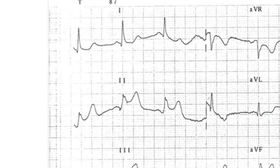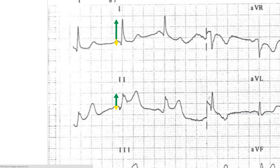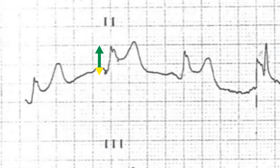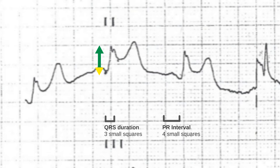The axis is normal with an upright complex in lead 1 and lead 2. The PR interval is normal measuring 4 small squares and the QRS complex is normal in duration measuring 3 small squares.